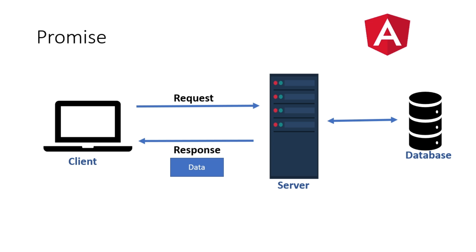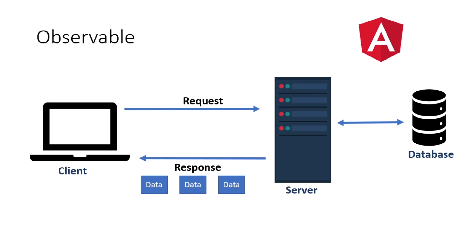Let me tell you about Promise using this diagram. From the client, which is our UI, one request will be sent to the server. Let's say we have millions of users — there will be one request sent from the UI to the server to get all the user data from the database. Since we have millions of records, what Promise will do is wait for all the data to come, and once it gets all the user data it will send all the data at once as a response.